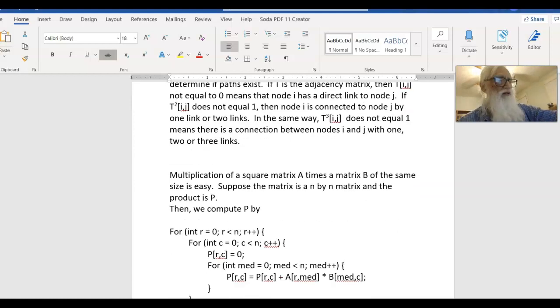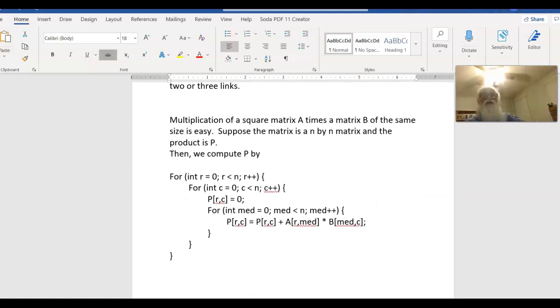I put here the actual multiplication code. I know you can do it, but the way things are going, I thought it might be easier for you if I put it down there. What it is, is to compute the product of two matrices, A and B, you go row and column. And for each row and column, you multiply the corresponding element in the first matrix times the element in the second matrix. The inner loop there goes through all possibilities.